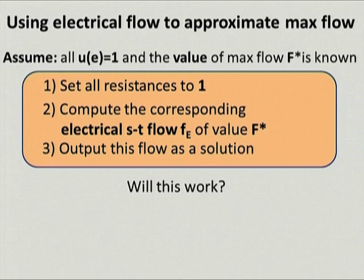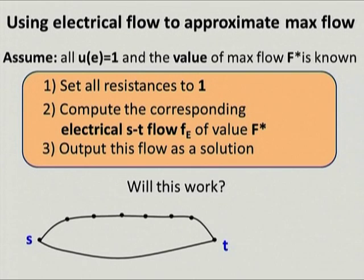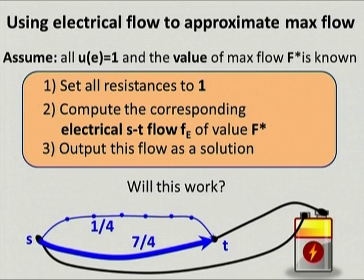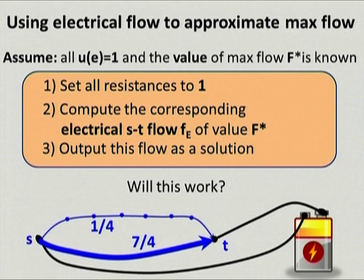Unfortunately this approach does not work. Consider a simple graph with two ST paths: one of length one and one of length seven. The max flow would send one unit on each path for a value of two. But the electrical flow will favor the shorter path much more because its resistance is much smaller, and you end up with something that does not look like a max flow. By scaling this example up, you can get farther and farther from any maximum flow solution.